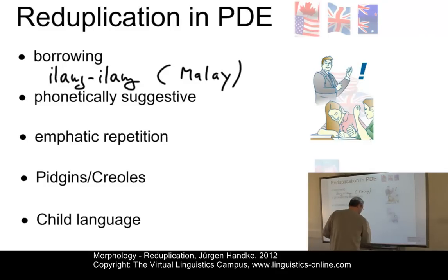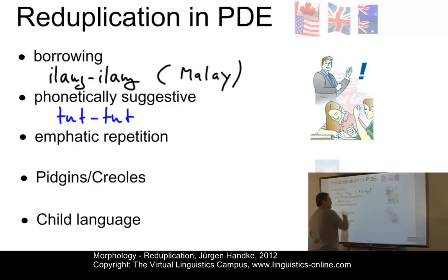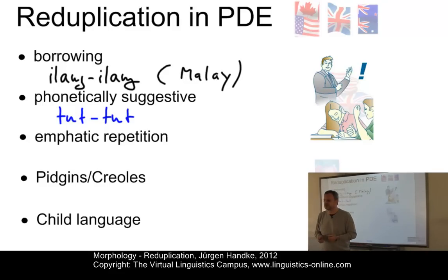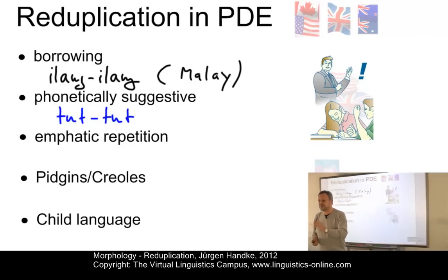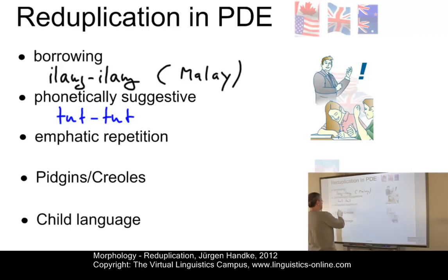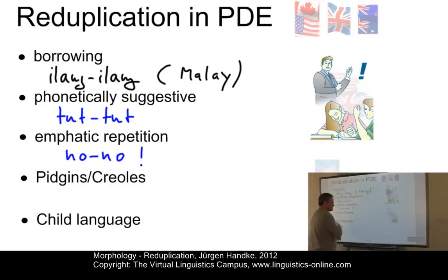An example of onomatopoeia would be toot-toot — I don't think I have to explain that word. Then sometimes we might put special emphasis on what we want to say. This is very often a substandard use of present-day English. For example, you could say something like 'This is a no-no!' — this is certainly out.